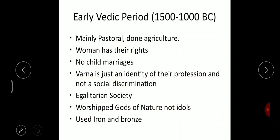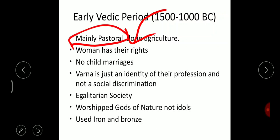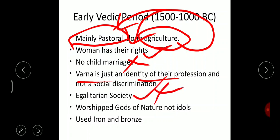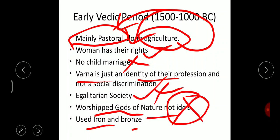To recap the early Vedic period: the Aryans came from Central Asia or the upper part of the northern hemisphere and were mainly pastoral — cattle rearing and cattle safeguarding. They also did agriculture mostly to grow food for cattle. Women had their rights, there were no child marriages, the Varna system was purely a profession identity on an individual basis and not social discrimination. It was an egalitarian society and they worshipped gods of nature with no idol worship. They used iron and bronze metals for wars and plowing.